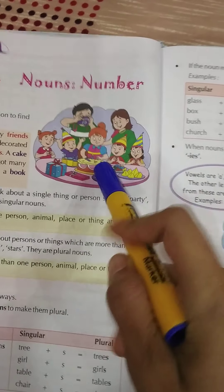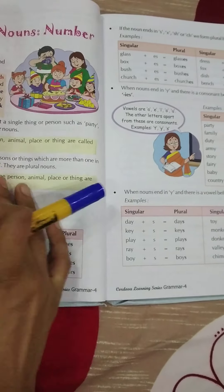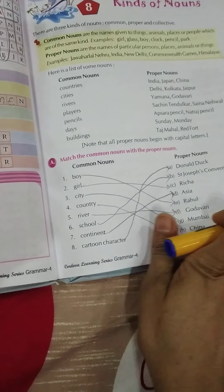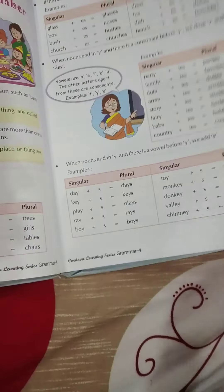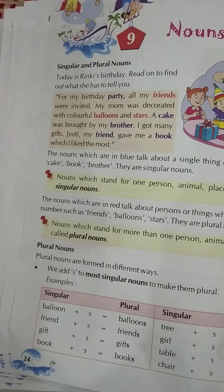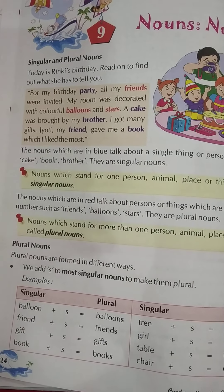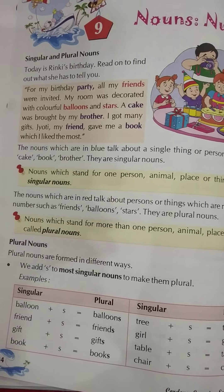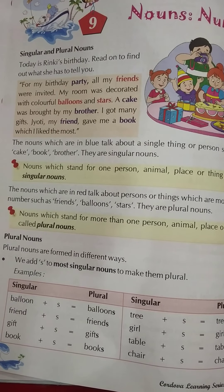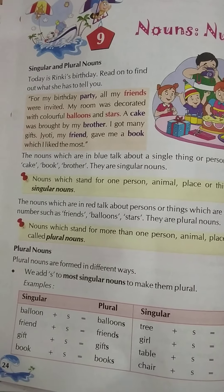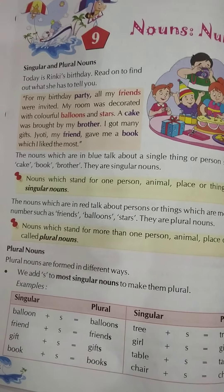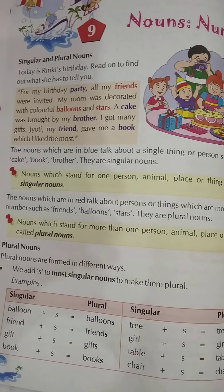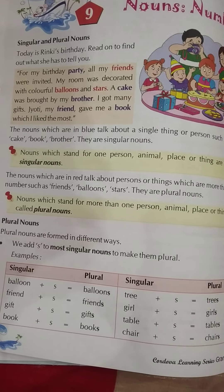Chapter nine is also about nouns, but it covers number — singular and plural. There are two types of number nouns: singular and plural. Singular means one single thing, and plural nouns means more than one.